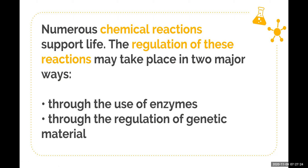A lot of chemical reactions, chemical processes, and metabolism are done through the help of enzymes. As well as the regulation of genetic material — because if enzymes are essentially proteins, then it follows the central dogma of molecular biology. Before producing proteins, it undergoes replication, transcription, and then translation, ultimately building the amino acid sequence for the primary structure of the protein, which forms the base structure for our enzymes.